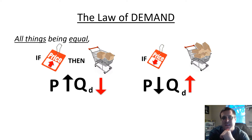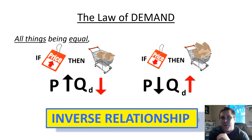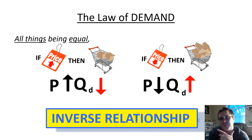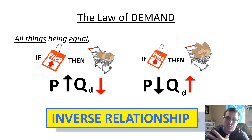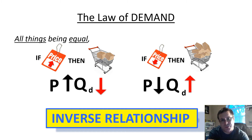The law of demand, all things being equal, is this: price goes up, quantity demanded goes down. Quantity demanded is the amount of a product people are going to buy. Price goes up, quantity demanded goes down; price goes down, quantity demanded goes up. It is always an inverse relationship — one goes up, the other must go down.